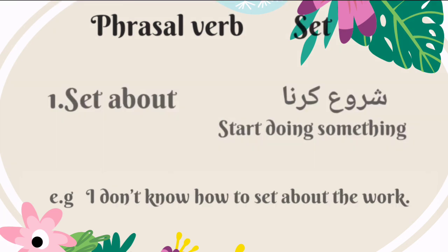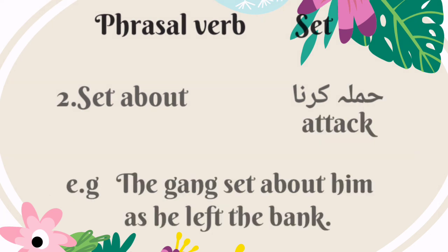Now we will start with the phrasal verbs of set. The first phrasal verb is 'set about.' It means start doing something — Urdu mein is ka matlab hai shuru karna. For example: I don't know how to set about the work. 'Set about' also means attack — Urdu mein is ka matlab hai hamla karna. For example: the gang set about him as he left the bank.